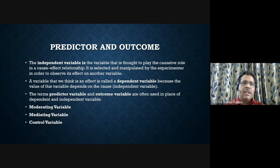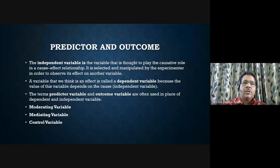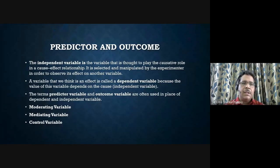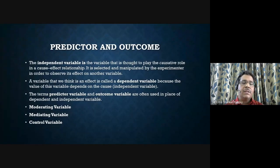We also have some idea about independent and dependent variables. Dependent variables are the ones from which we get data, and independent variables are the ones thought to play a causative role in a cause-effect relationship. They are manipulated or varied to see the effect on the dependent variable. That is why we often use the terms predictor variable and outcome variable. The influence of moderating variables, mediating variables, and control variables must also be known.